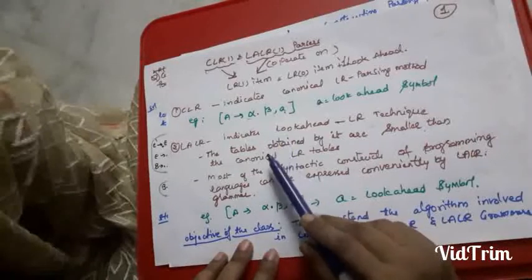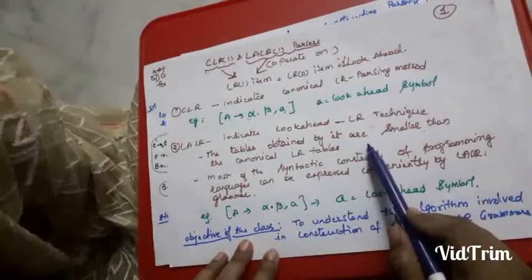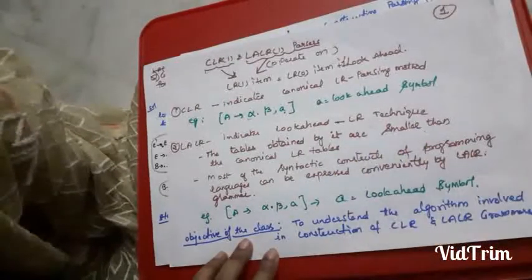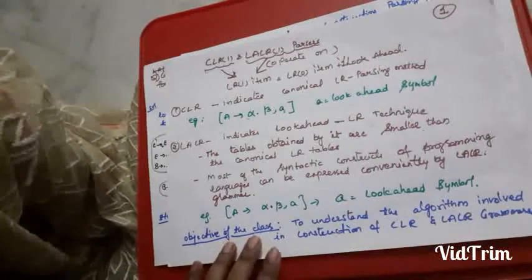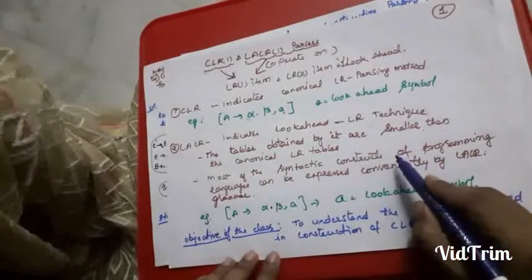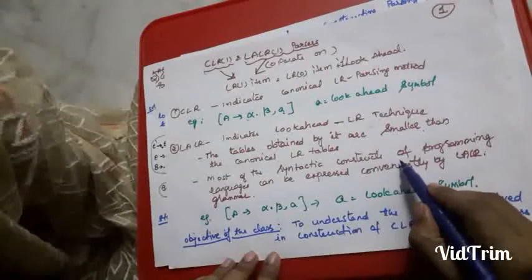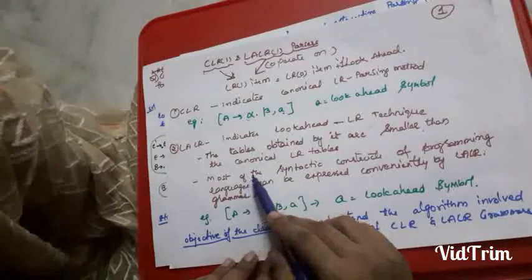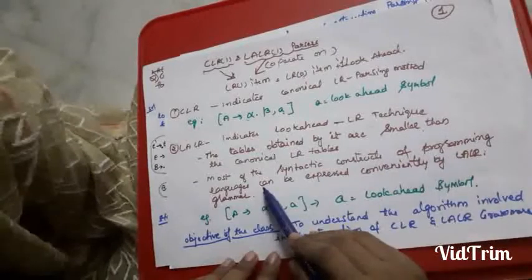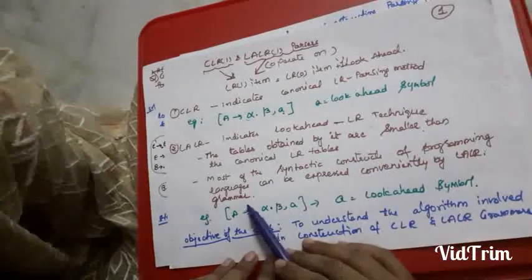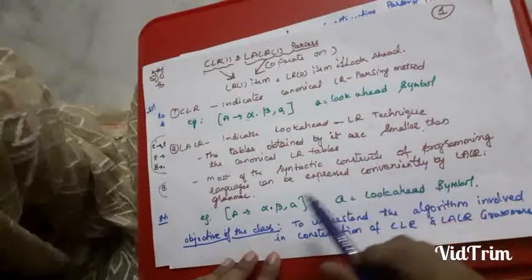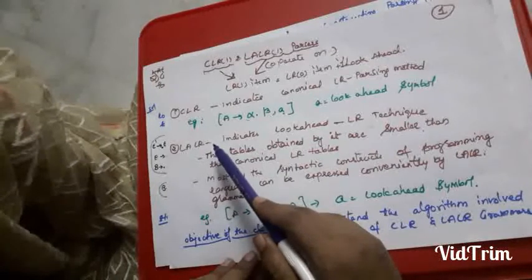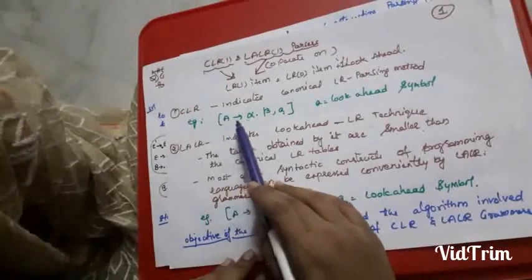Among CLR and LALR, the LALR parsing table is much simpler and smaller than the CLR table. We can generate the parse tree using both CLR and LALR, but LALR is much easier to construct the parsing table and generate the parse tree. One more advantage of LALR1 is that most synthetic constructs of programming languages can be expressed conveniently by LALR1 grammars, so LALR is always preferred over CLR.